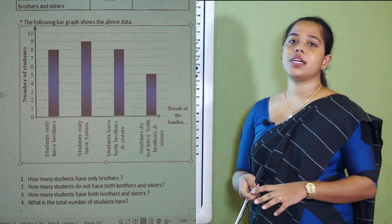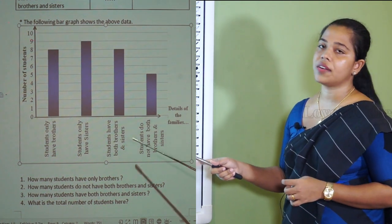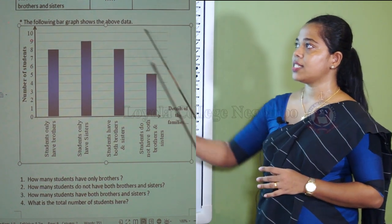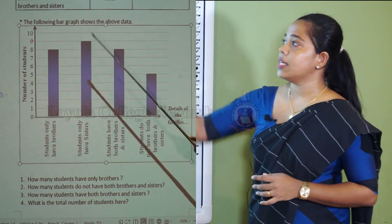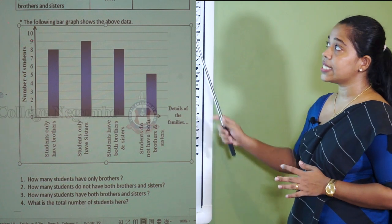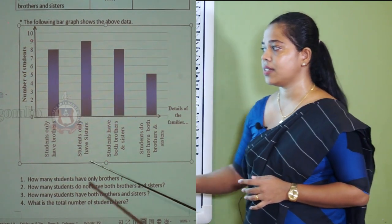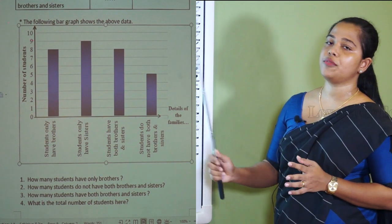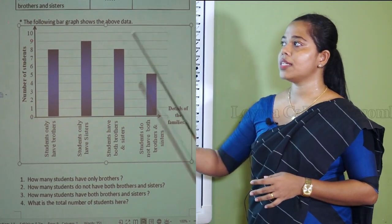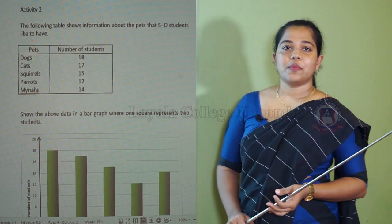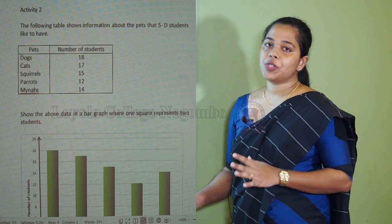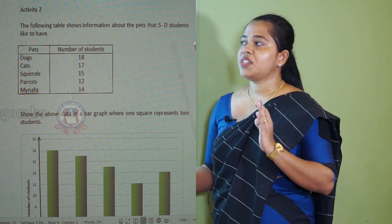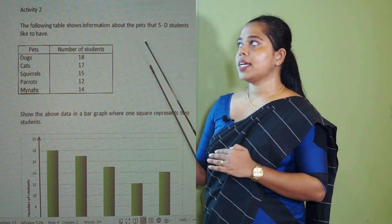Likewise, you can draw a graph and answer questions looking at the data table or the graph. When drawing a graph, keep in mind all the points: name the axes, put the numbers on the vertical axis, and name all the categories as given in the data table. If you include all these points, you can obtain full marks in an exam. Now in activity 2, I am going to teach you to take different scales and draw a graph.